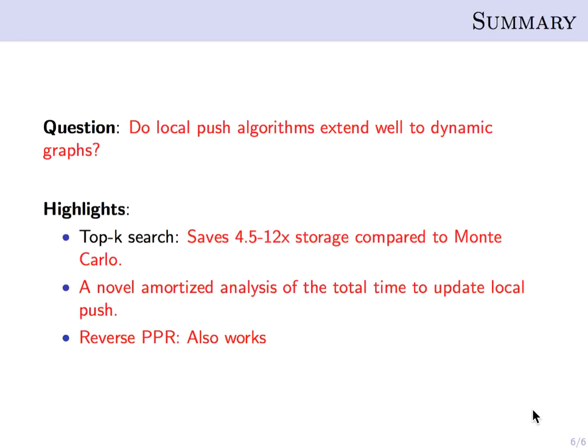So in this work, we show that local push has a very natural generalization to the dynamic setting. As an example, for the task of finding the top K personalized PageRank values, it saves a significant amount of storage in our experiment compared to Monte Carlo, and it uses less time to update as well without sacrificing accuracy. In addition, we analyzed their running time through a novel amortized analysis in the dynamic setting.